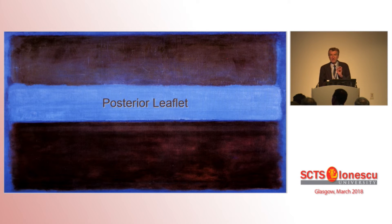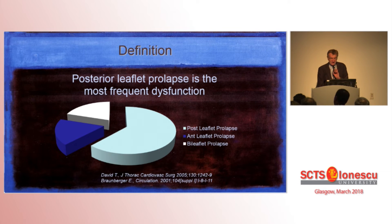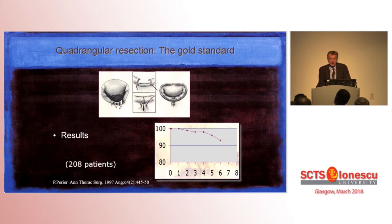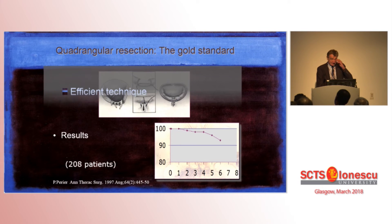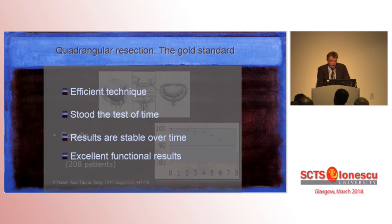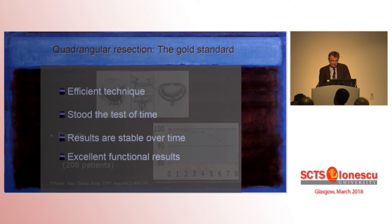We'll concentrate on the posterior leaflet because it is the most frequent site of dysfunction and where most of the problems are. In the past, the gold standard has been quadrangular resection. It gave very good long-term results — it was an efficient technique that stood the test of time, with stable and very good functional results.